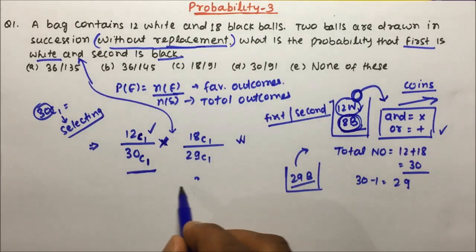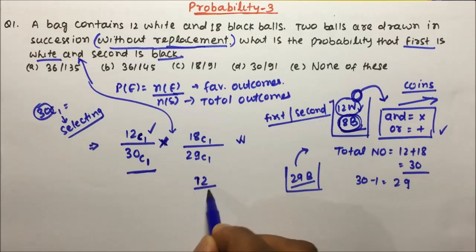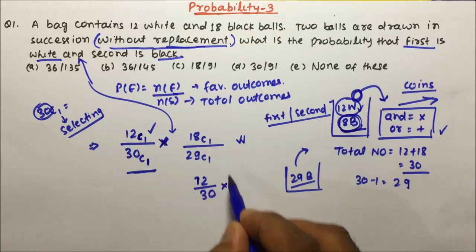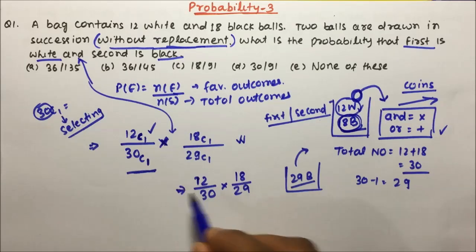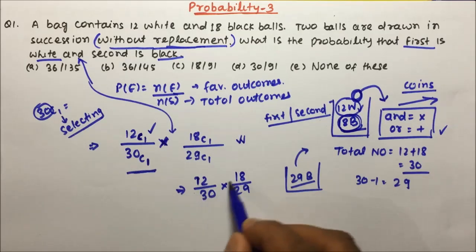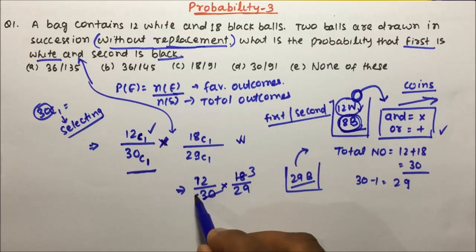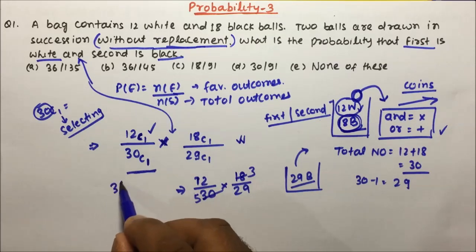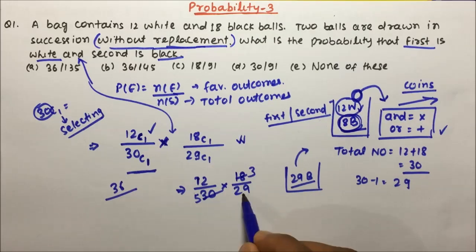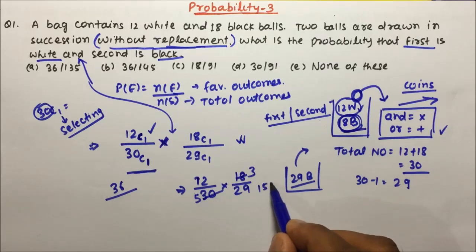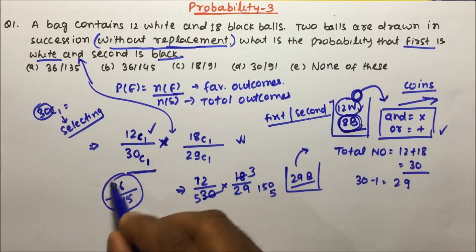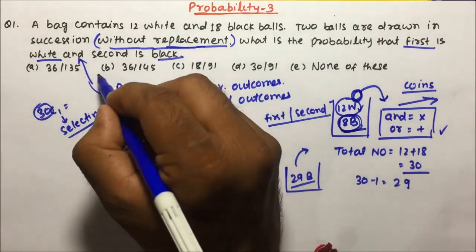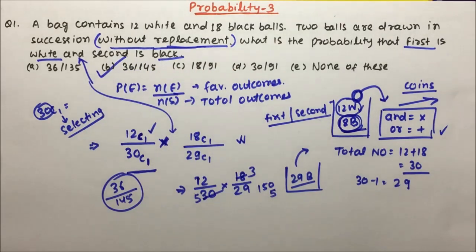Calculating: 12 divided by 30 multiplied by 18 divided by 29. Simplifying — 6 goes into 12 and 30, giving 2 and 5 — so we get 12 × 18 / (30 × 29) = 36 / 145. Therefore, option B is the correct answer for question number 1.